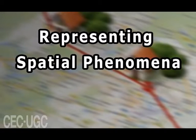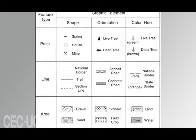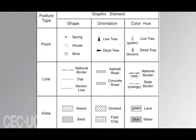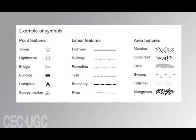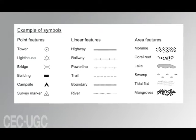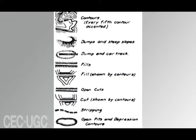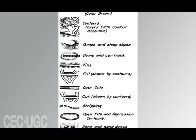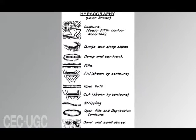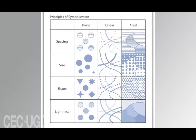Now let us discuss representing spatial phenomena. Symbols are used to represent geographic phenomena. Most phenomena can be represented by using point, line, or area symbols. It is necessary to consider the spatial arrangement of the phenomena to determine what kind of symbolization it will require. Discrete phenomena occur at isolated points, whereas continuous phenomena occur everywhere. Both of these can also be broken down into either smooth or abrupt.